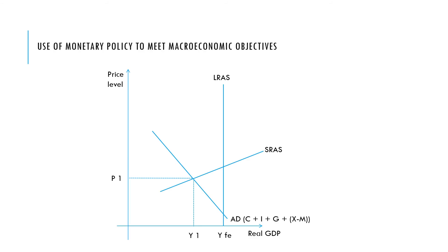How would we do a diagram to illustrate this? We imagine here we have an economy operating at P1Y1, a low level of inflation and a low level of economic growth, and so we want to stimulate demand in this economy. We would reduce the reserve ratio, which would lead to an increase in consumption and investment, moving our price level back towards target and increasing the rate of economic growth.